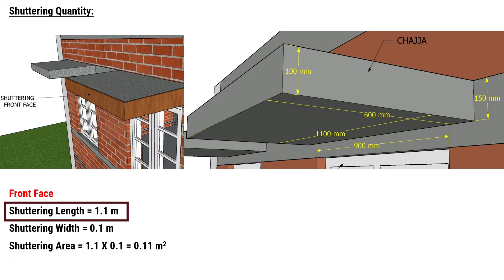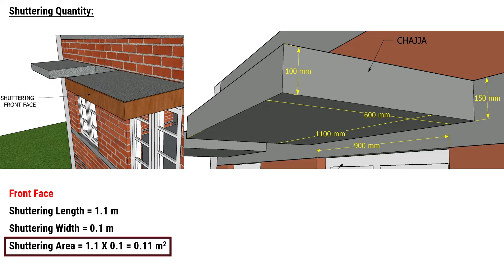The front face has a length of 1.1 meters and a depth of 0.1 meters. The shuttering area of the front face will be 1.1 × 0.1 meters, resulting in a total area of 0.11 square meters.